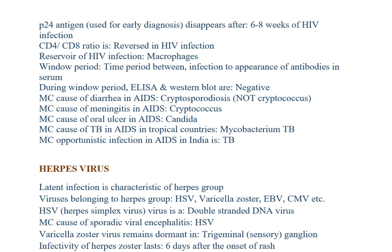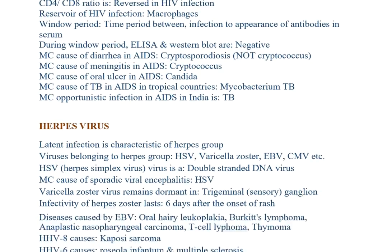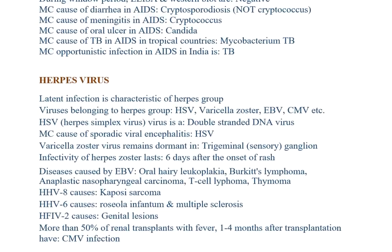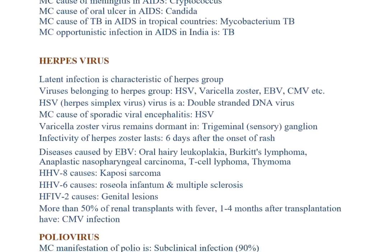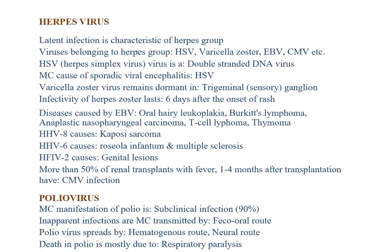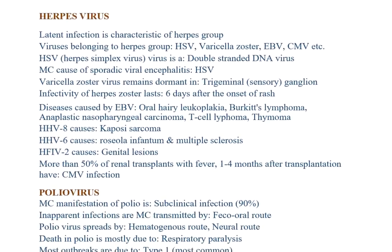Most common cause of TB in AIDS in tropical countries is Mycobacterium tuberculosis. Most common opportunistic infection in AIDS in India is TB, because Mycobacterium tuberculosis is present in most of us and whenever immunity is compromised it dominates and causes disease.